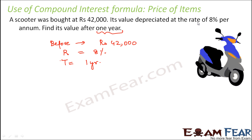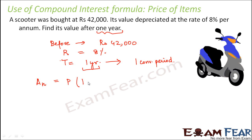Since the decrease is happening per annum — that is, compounded annually — in a period of one year you will have only one conversion period. The compound interest formula is: An = P into 1 plus R by 100 to the power n, when there is an increase. But when there is a decrease — in this case, depreciation — it would be 1 minus R by 100 to the power n.